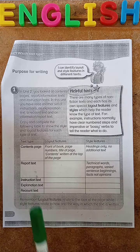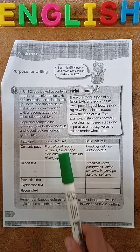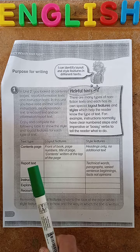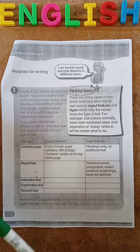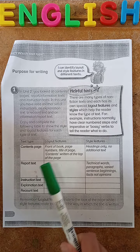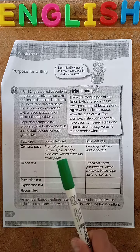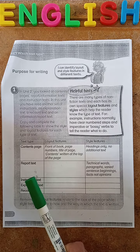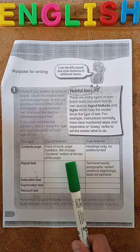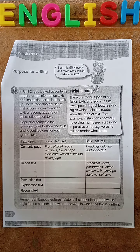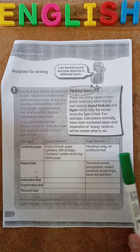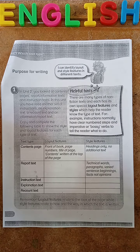The first one they've done is a contents page. The layout features are that it's at the front of the book, has page numbers, titles of pages, and 'contents' written at the top of the page. The style features are headings only, with no additional text.